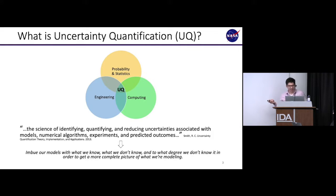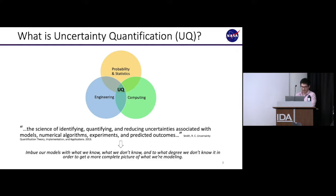For a concrete definition, I borrowed from Ralph Smith's textbook: UQ is the science of identifying, quantifying, and reducing uncertainties associated with models, numerical algorithms, experiments, and predicted outcomes. More intuitively, UQ helps imbue our models with what we know, what we don't know, and to what degree we don't know it — in order to get a more complete picture of what we're modeling. In short: making our models more useful.